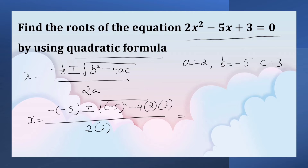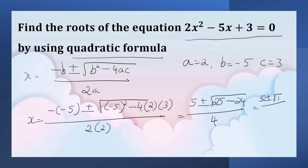This is equal to 5 plus or minus the square root of 25 minus 24, upon 4. That is equal to 5 plus or minus the square root of 1, upon 4. So x is equal to 5 plus or minus 1, upon 4.